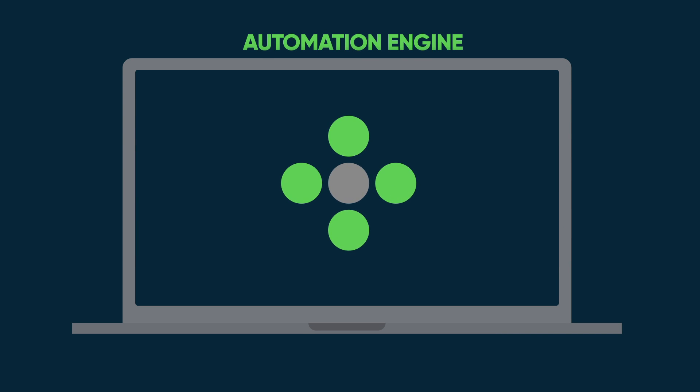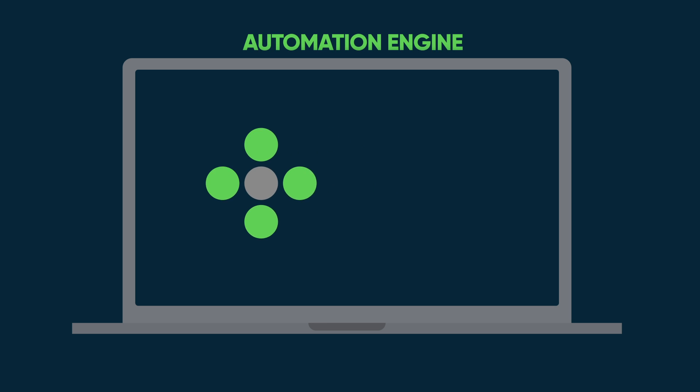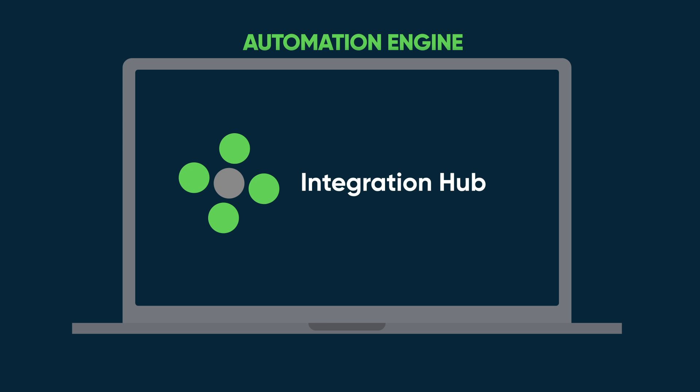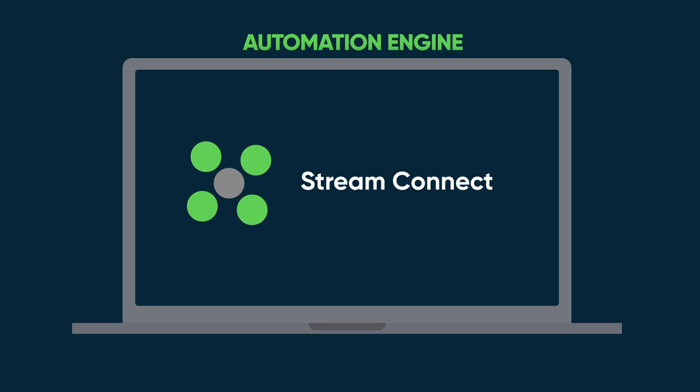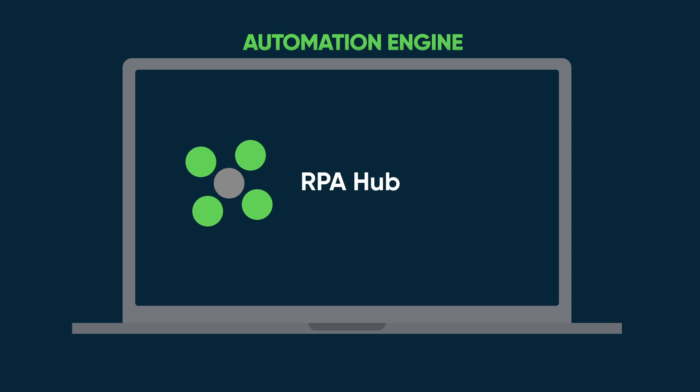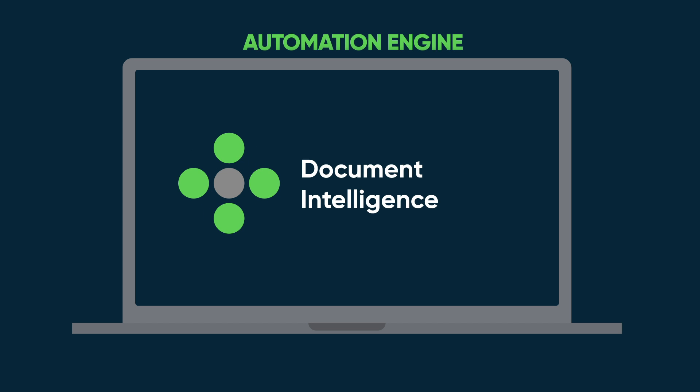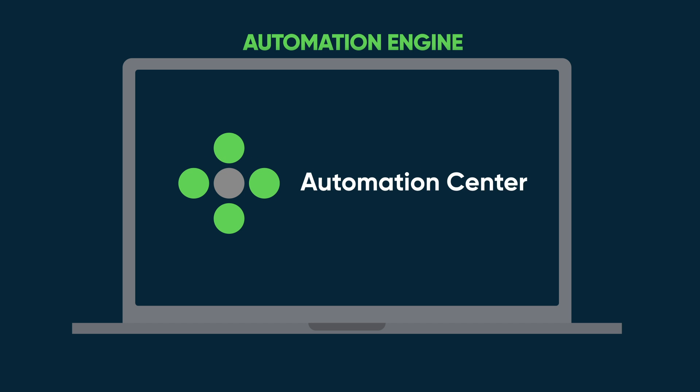Automation Engine is the combination of Integration Hub, Process Mining for External Data, Stream Connect, RPA Hub, Document Intelligence, and Automation Center, which binds them all together.